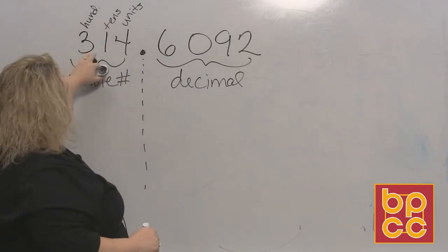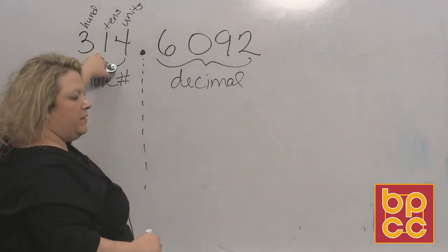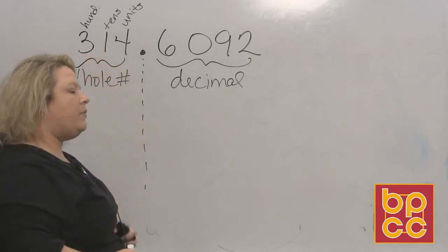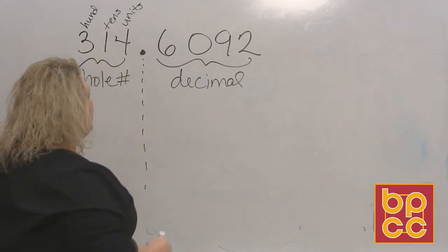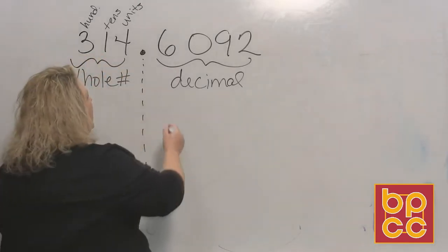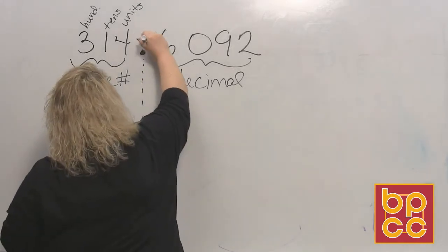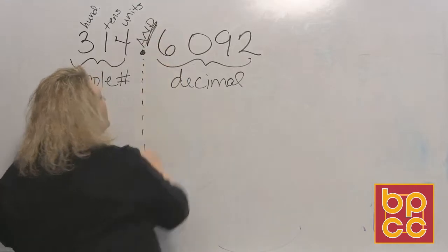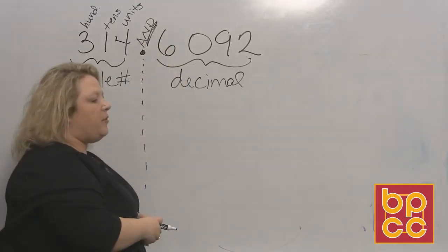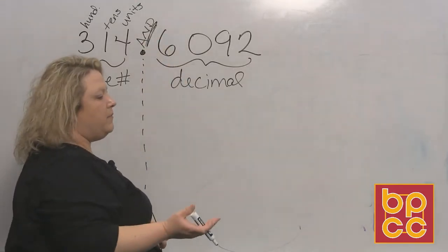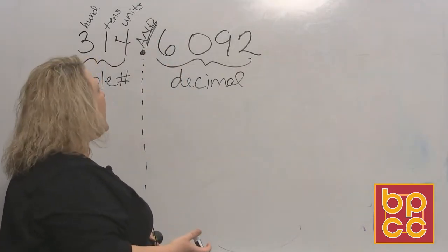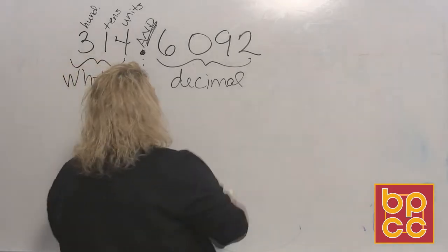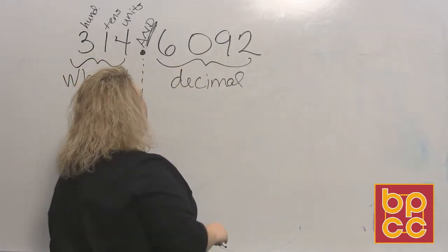Notice we don't use the word 'and' in between three hundred and fourteen — we say three hundred fourteen. The reason for that is because now we have decimals, and this decimal point is where you use the word 'and.' The decimal point separates the whole number part from the decimal part, and the word 'and' is where we place the decimal.